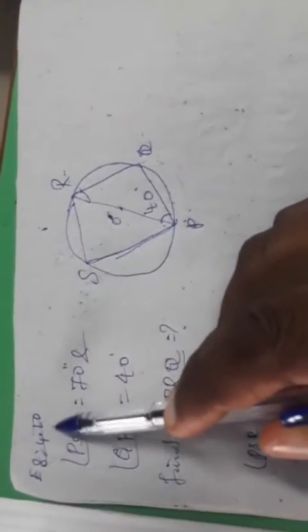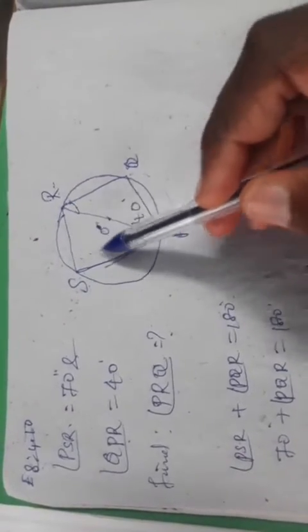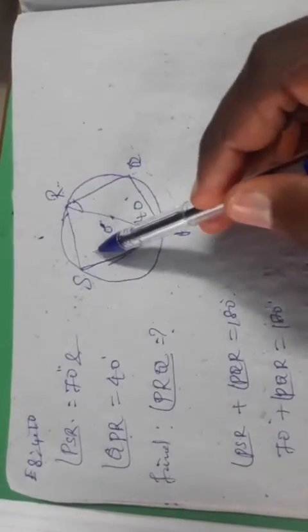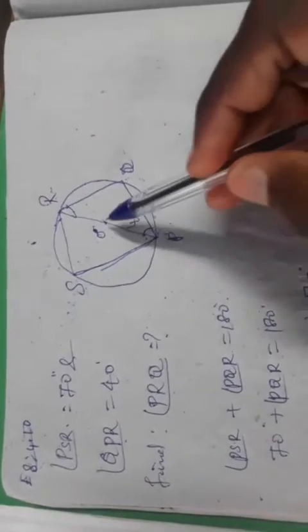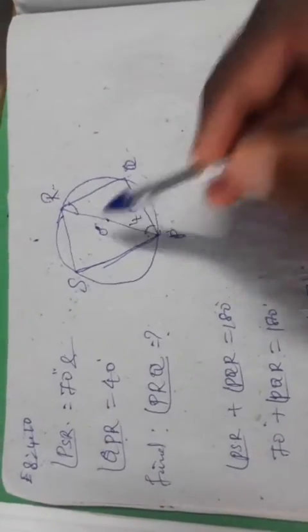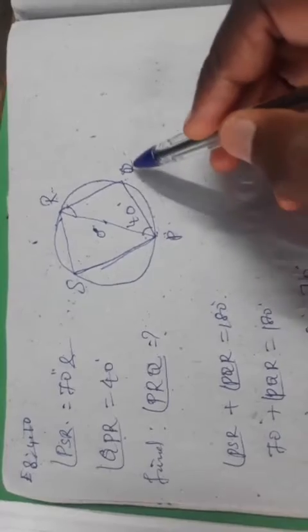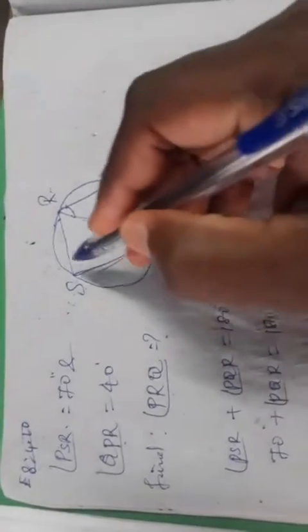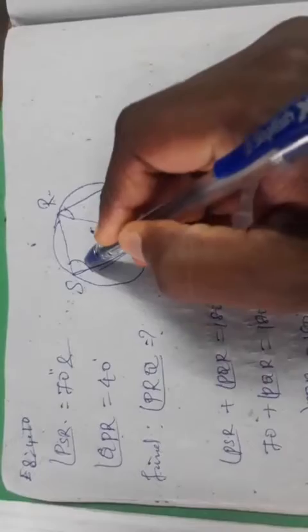Example 4.10, solution: Draw a cyclic quadrilateral PQRS with all four vertices lying on the circle. O is the center of the circle. Given: angle QPR is 40 degrees and angle PSR is 70 degrees.